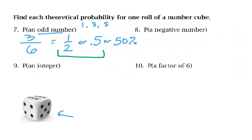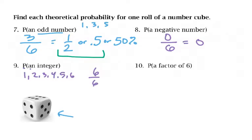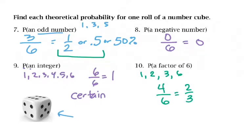What's the probability of rolling this dice and getting a negative number? There are zero negative numbers on a die, so zero out of six, which is zero — an impossible event. The probability of getting an integer: 1, 2, 3, 4, 5, and 6 are all integers, so there's a 6 out of 6 probability — no matter what you do, you'll get an integer. This is what we call a certain event. For a factor of 6: the factors are 1, 2, 3, and 6, so four out of six outcomes are factors of 6, making the probability 4/6 or two-thirds.